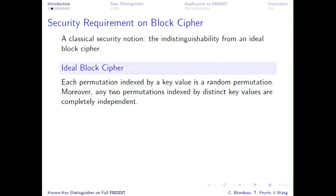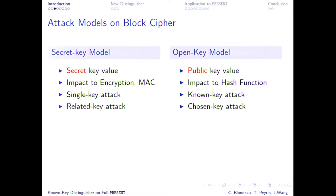What's also nice with the block cipher is that we have a very good understanding of what an ideal block cipher should be. It's simply that for every different key, we want to draw a random permutation uniformly at random. Then we can evaluate the security of an actual block cipher by seeing if it's easy to distinguish whether we have an ideal block cipher or our concrete construction. Block ciphers have been around for a long time, so we have many different ways to attack them and also many different models.